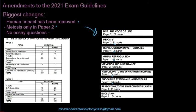Responding to the environment in plants is 13 marks, which is up by two marks. Evolution has actually come down — it is now 54 marks; it used to be 66 marks.